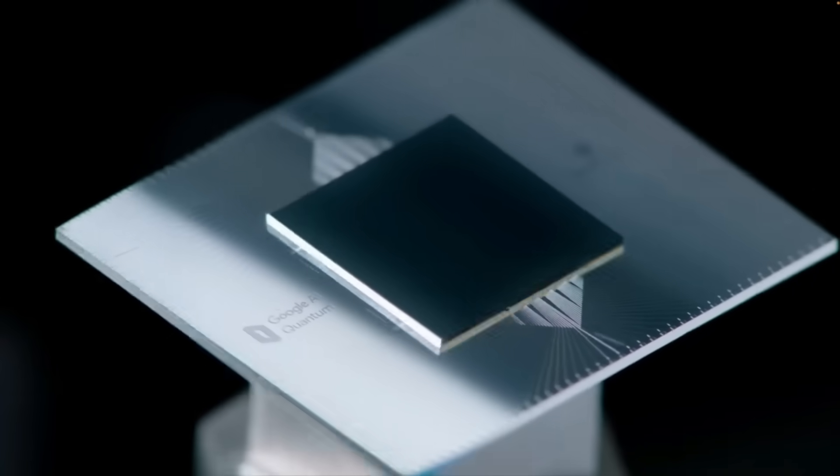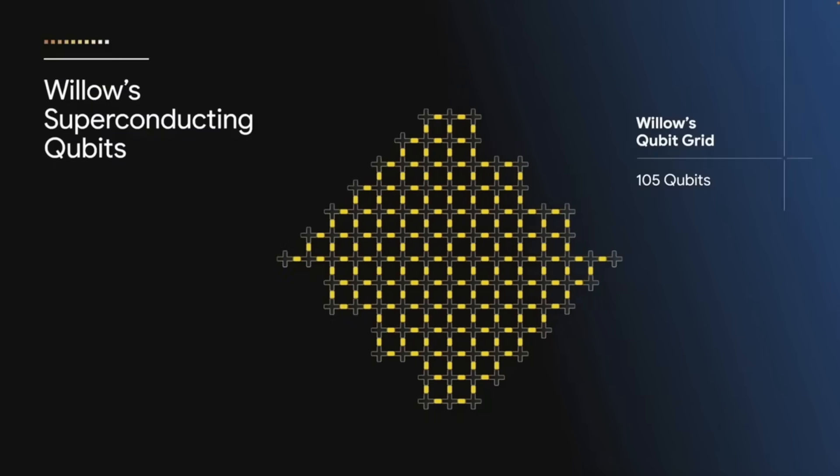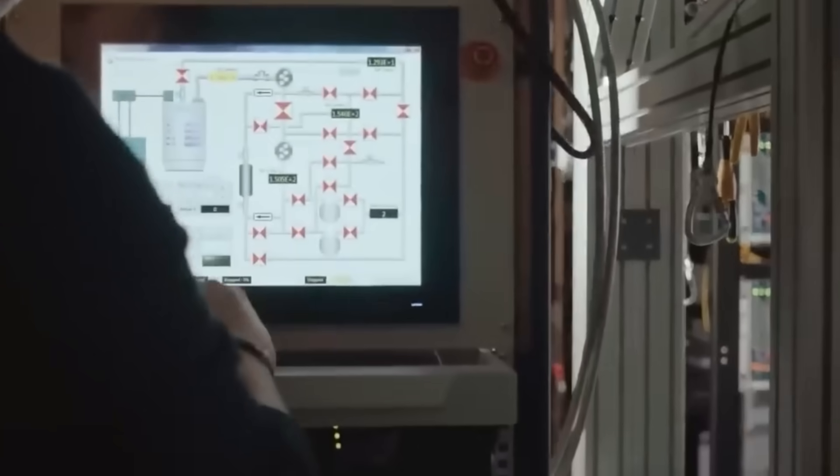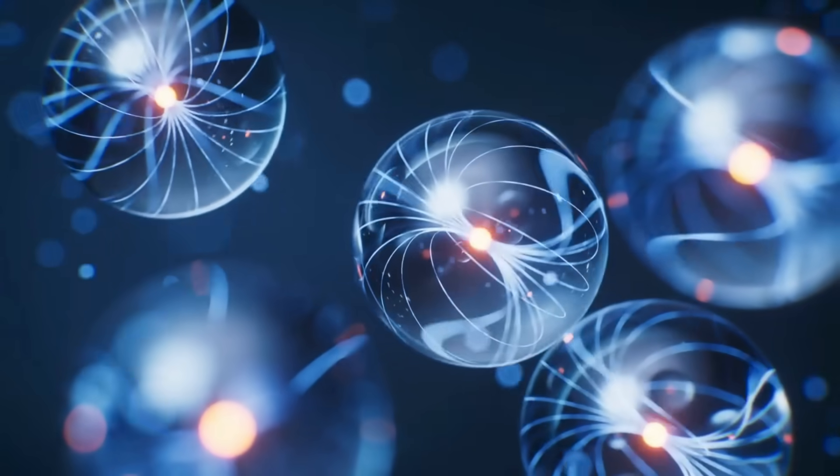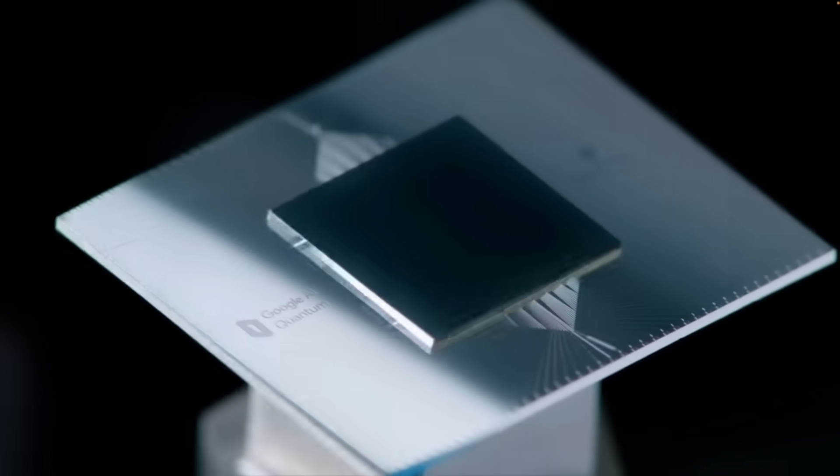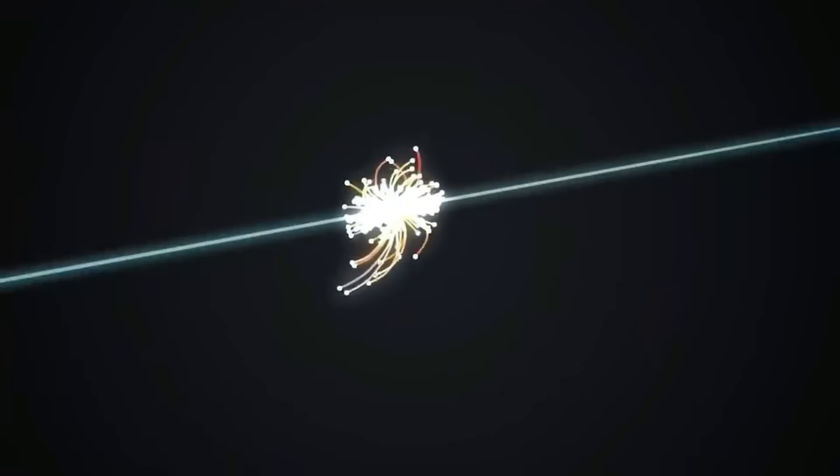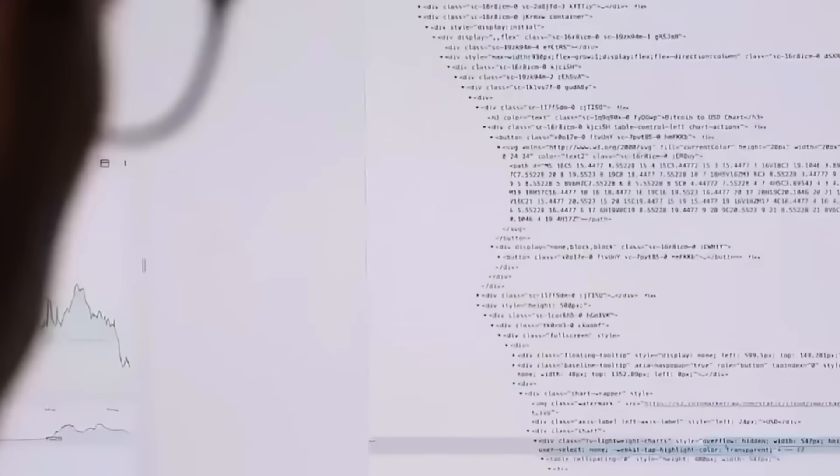The second face is Chaitin's Omega, a mathematical concept far more profound than movie fiction. Gregory Chaitin discovered a number so powerful it's actually uncomputable. Omega represents the probability that a random computer program will eventually stop running, instead of continuing forever. If you could calculate Omega to enough decimal places, you'd solve computer science's famous halting problem, and essentially have a master key to all mathematics. Imagine a single number that answers every yes, no question in mathematics. That's Omega.